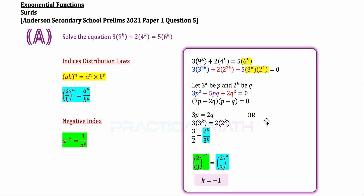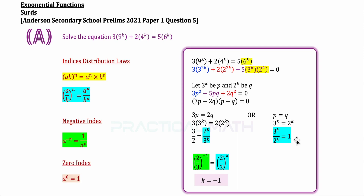Moving to the second solution set, we set p minus q equal to 0, so p equals q. Changing back the substitution, we now have 3 to the power of k equal to 2 to the power of k. Shifting 2 to the power of k to the right gives us 3 to the power of k divided by 2 to the power of k on the left, and 1 on the right. Since anything to the power of 0 equals 1, we can rewrite this 1 as 3 over 2 to the power of 0.